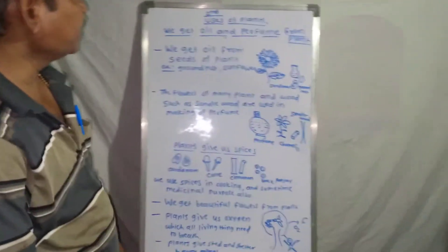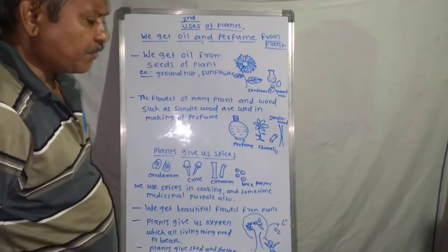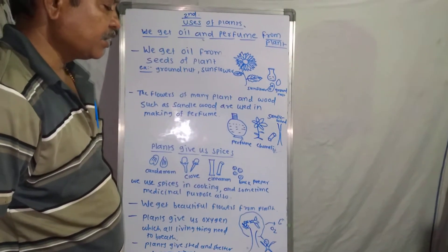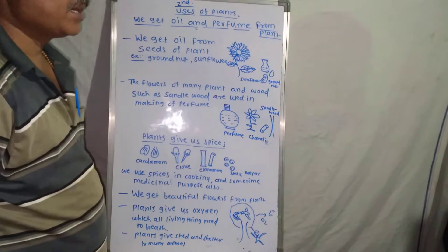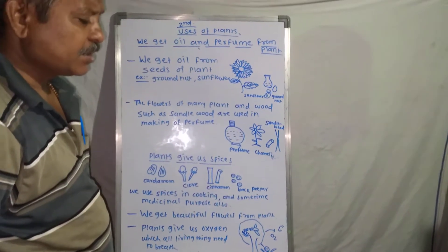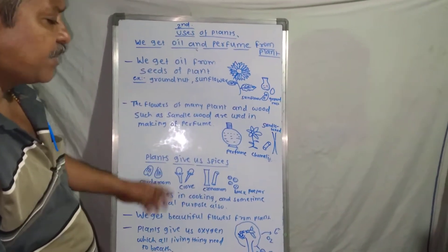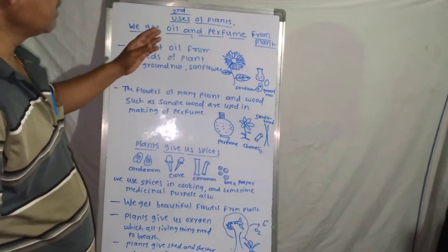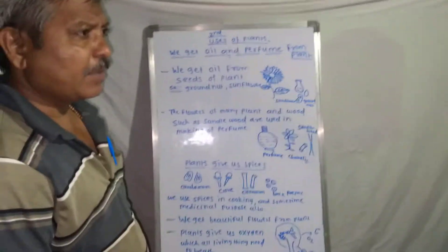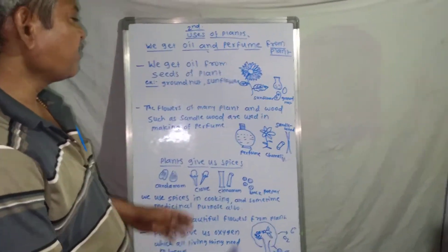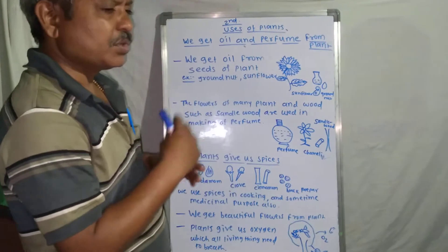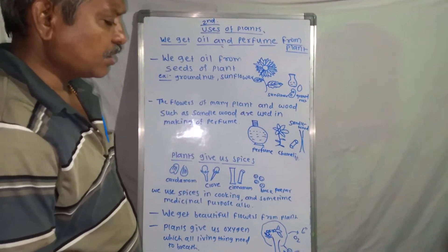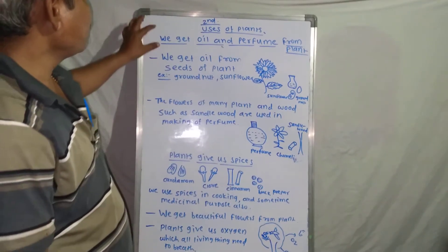Hi friends, we are going to see about the uses of plants. Before this, we saw that a plant is used as food, for getting fibers, and many more things — plants are used as medicine. Apart from this, there are some other uses of plants, and today we will look at those other uses.